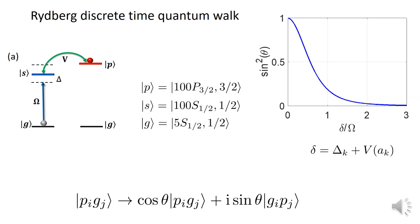To explain the scheme, first consider two lattice sites. The walker is initialized in 100P Rydberg state and the other site in ground state would get excited and de-excited to the 100S auxiliary state by the laser. Over this time, the exchange interaction would delocalize the initial PG state to a superposition of PG and GP. The hopping angle is defined by the ratio of effective laser detuning to the laser Rabi frequency.